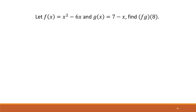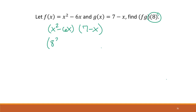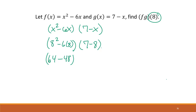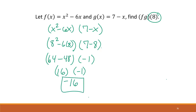Here we're multiplying and evaluating at 8. We have f(x) = x² − 6x and g(x) = 7 − x, and we want the product at 8. So: (8² − 6·8)(7 − 8) = (64 − 48)(−1) = 16 · (−1) = negative 16 as the final answer.